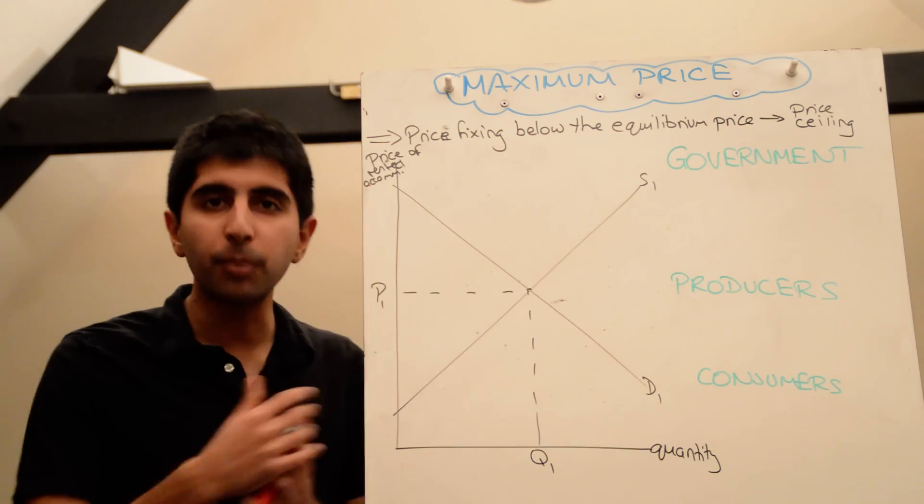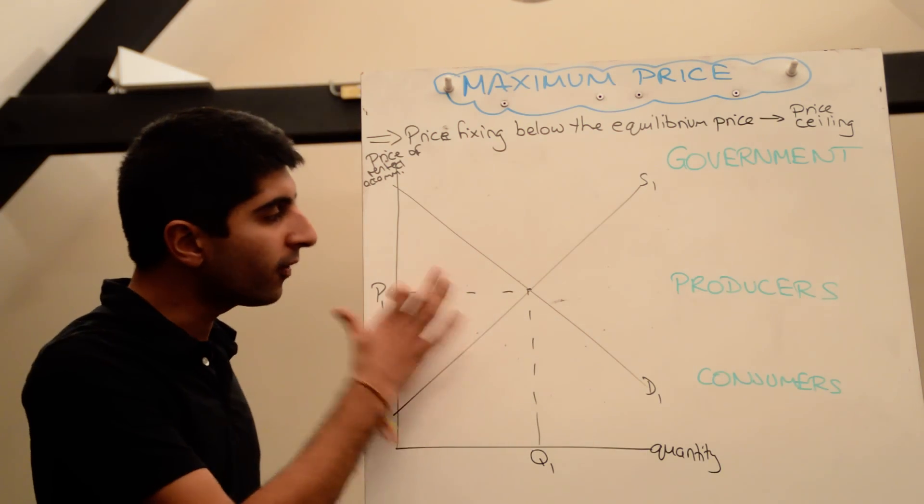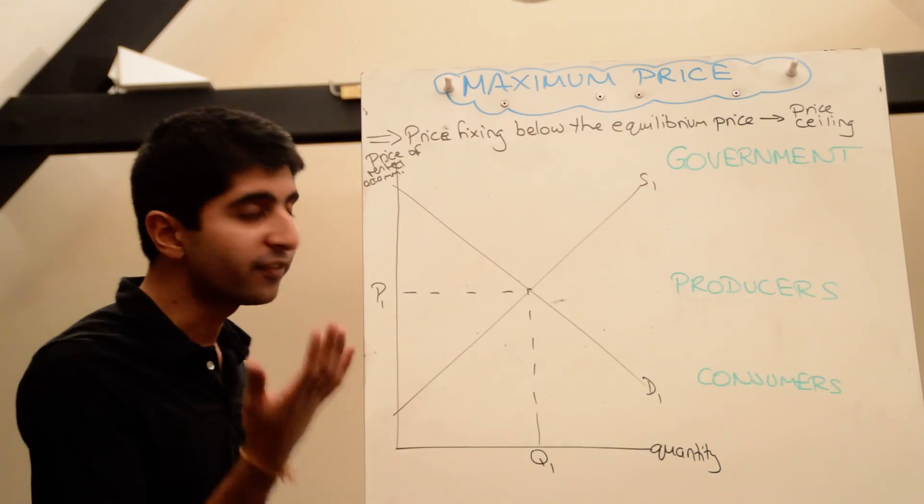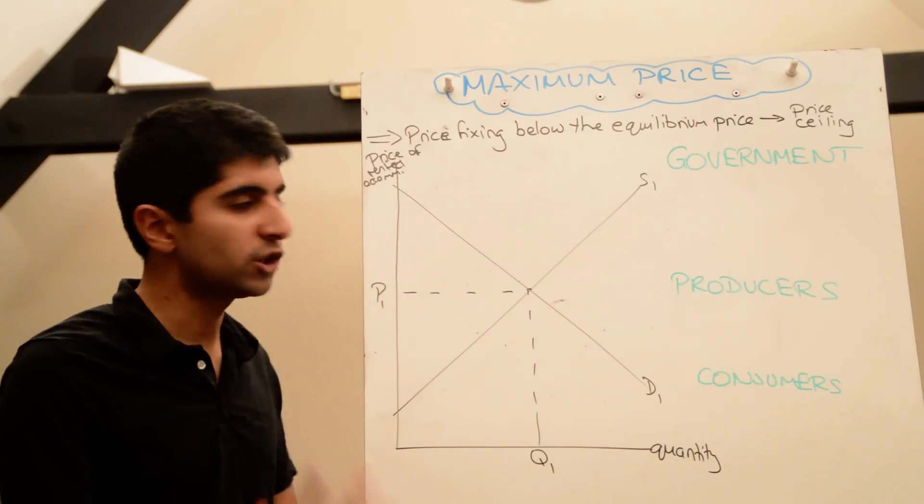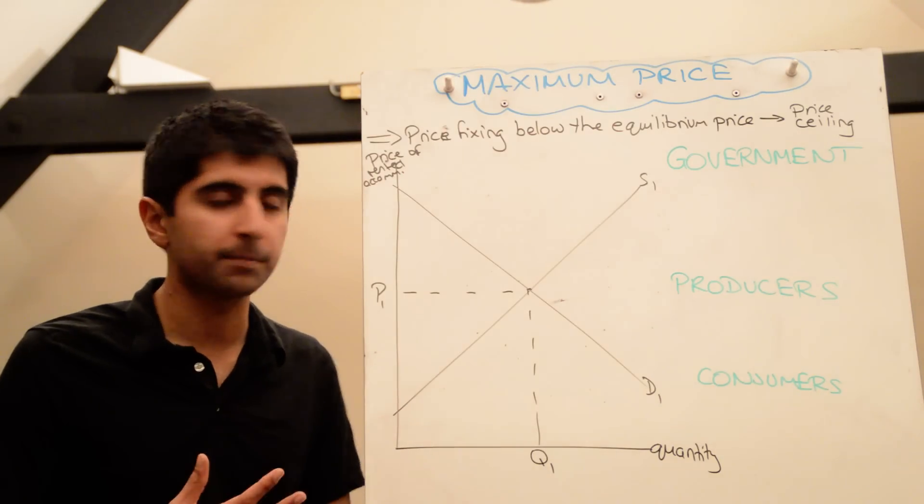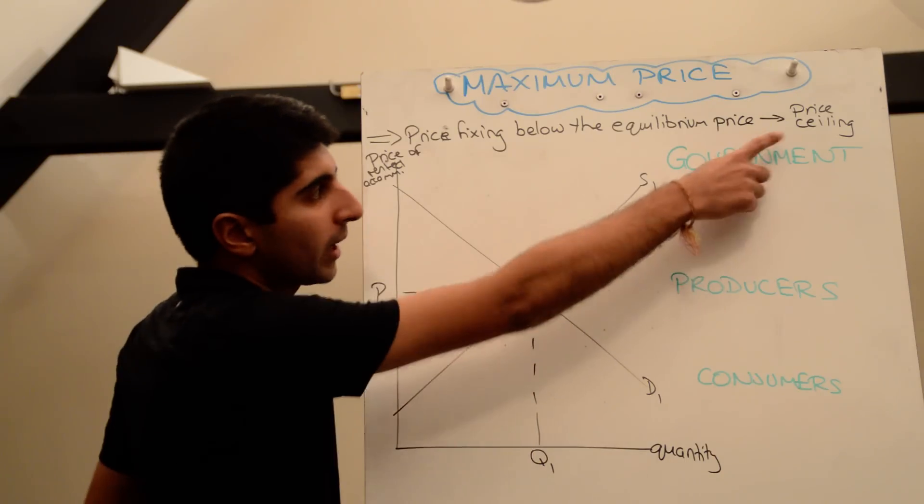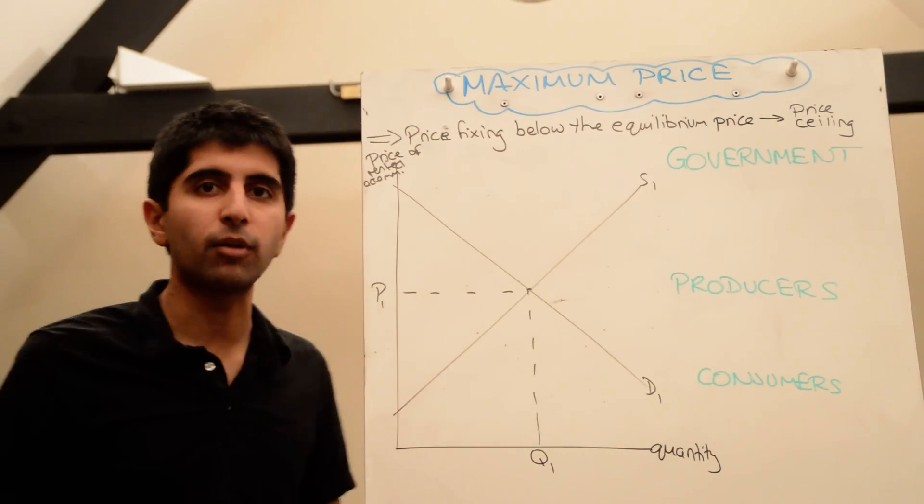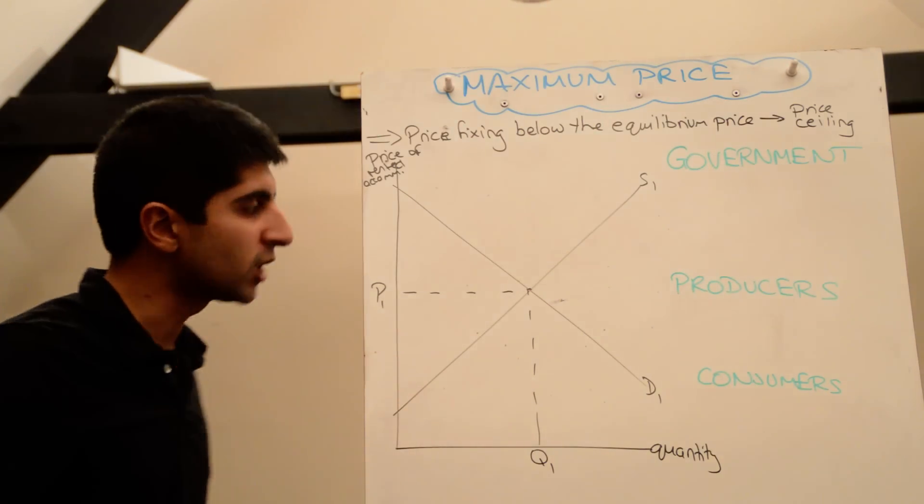To basically support consumers. So if governments feel that the price for a good or service is too high, they can fix the maximum price below the equilibrium to ensure that consumers can actually afford it. We call maximum prices price ceilings because the price can't go above. That is the ceiling price, the maximum price that can be charged.